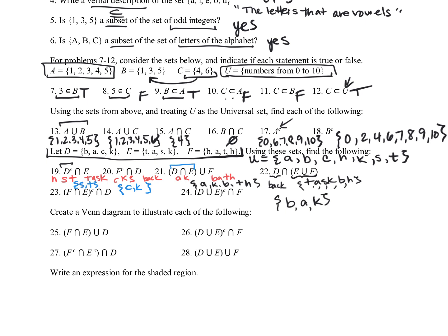For question number twenty-three, we're looking at intersecting F and E and then their complement. So F intersected with E is going to be the letters A and T. And so the complement of that would be B, C, H, K, S. And we want to intersect that with D, which is B, A, C, K. And so for the final answer, they both have B, they both have C, and they both have K. So it will be B, C, K.